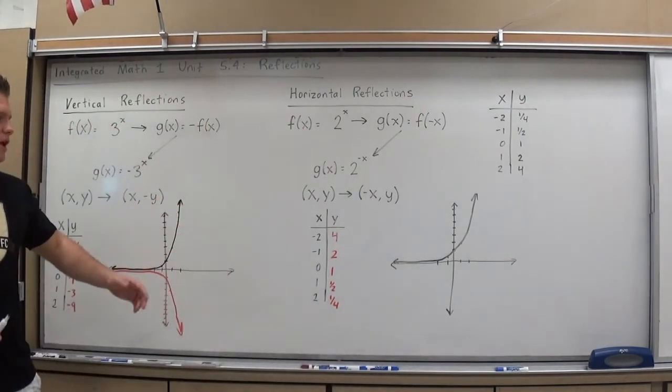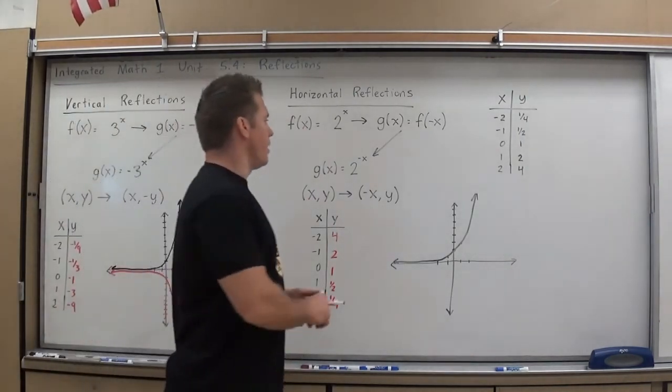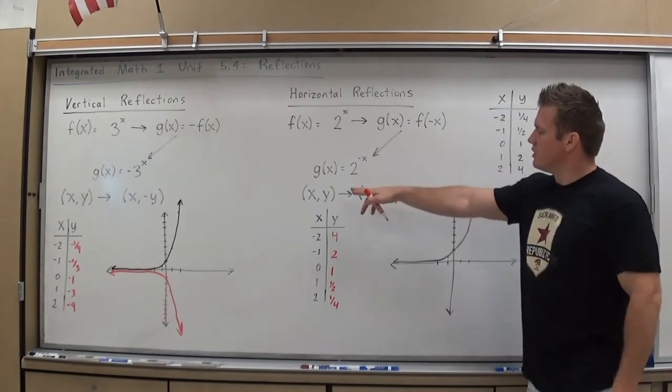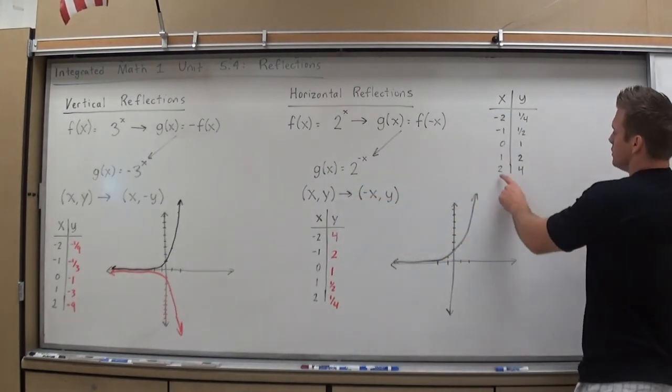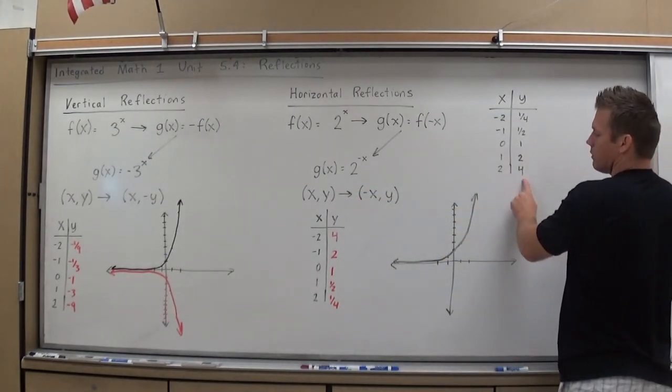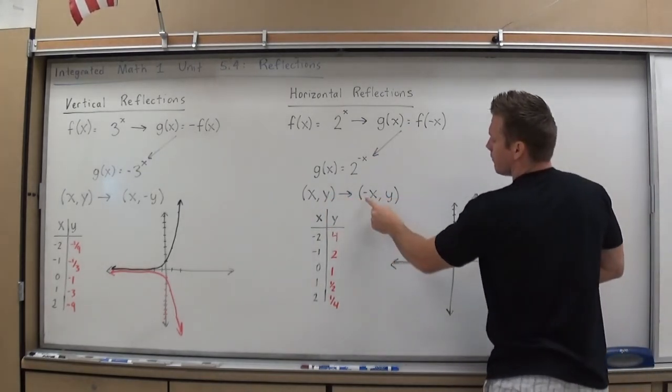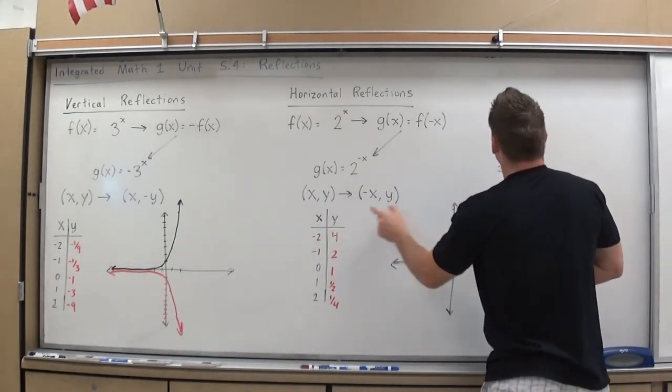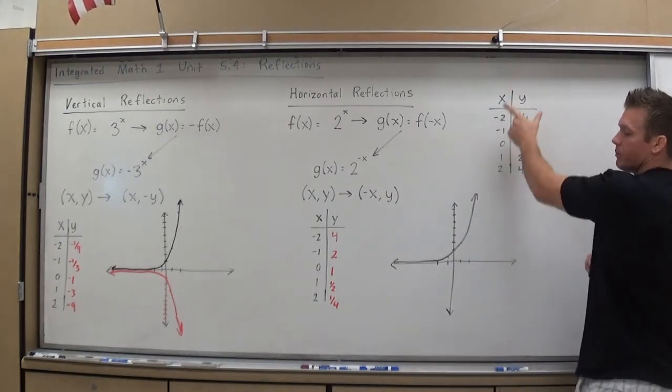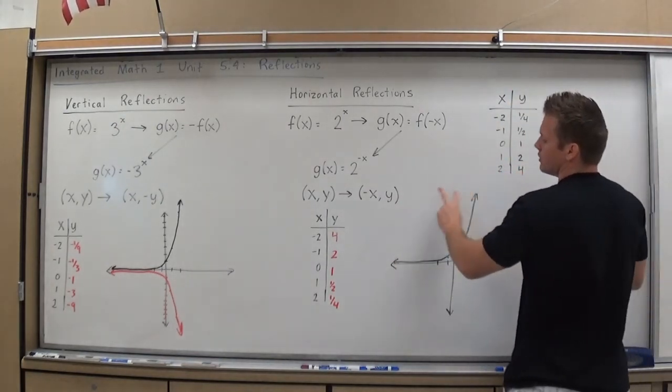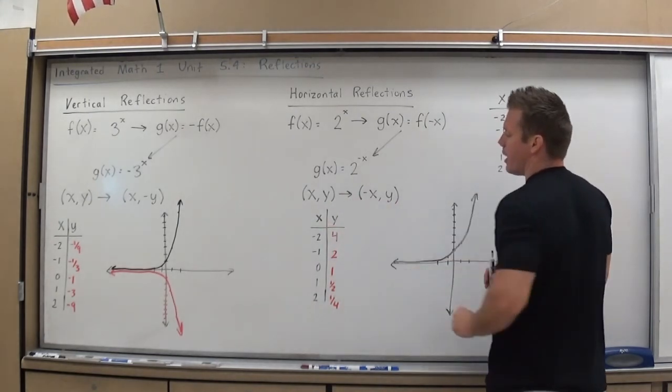But if you take a look at the table, comparing the tables, it does indeed do what we said it would. 2, 4 became negative 2, 4. And you can see that our table is pretty much upside down, backwards in comparison. But if you took each point and tried to find it here, it would follow that pattern.